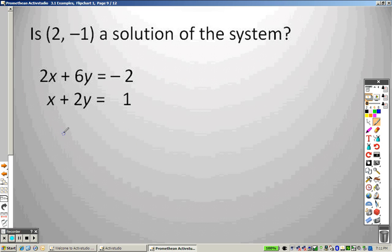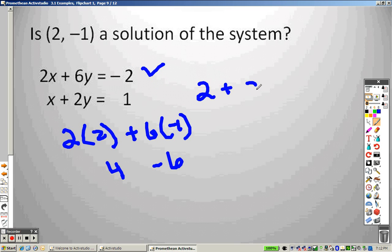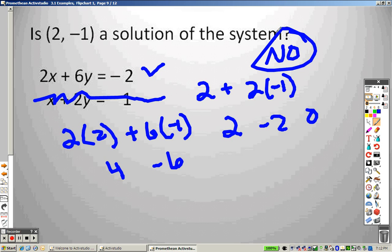And to check this out, you just plug it in again. It has to work for both. So 6 and negative 1. That's a 4. That's a negative 6. So it works for the first one. If I plug it in for the second one, that's 2. 2 times negative 1. So I get 2 and a negative 2, which is 0. So no, it does not work, because it doesn't work in the second one.